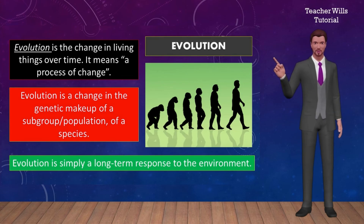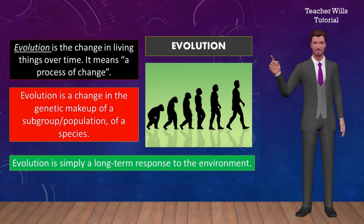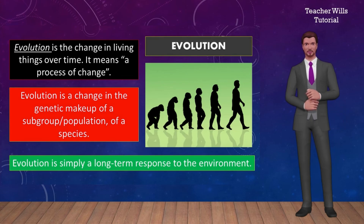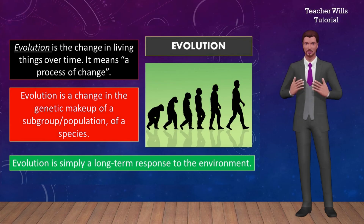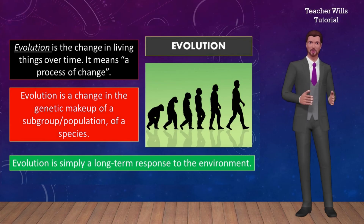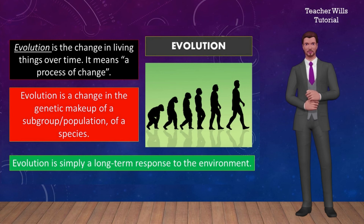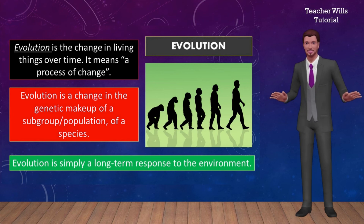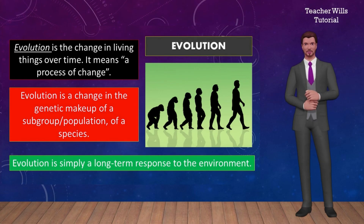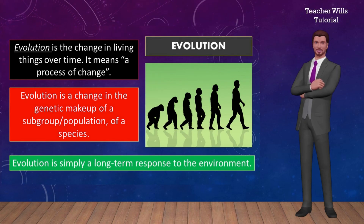Next, we have evolution. Evolution is a unifying theme in biology. It explains changes in organisms over long periods of time. Evolution is the change in living things over time — a process of change in the genetic makeup of a subgroup population of a species. Evolution links observations from all of biology, from cells to the biosphere. Evolution is simply a long-term response to the environment.